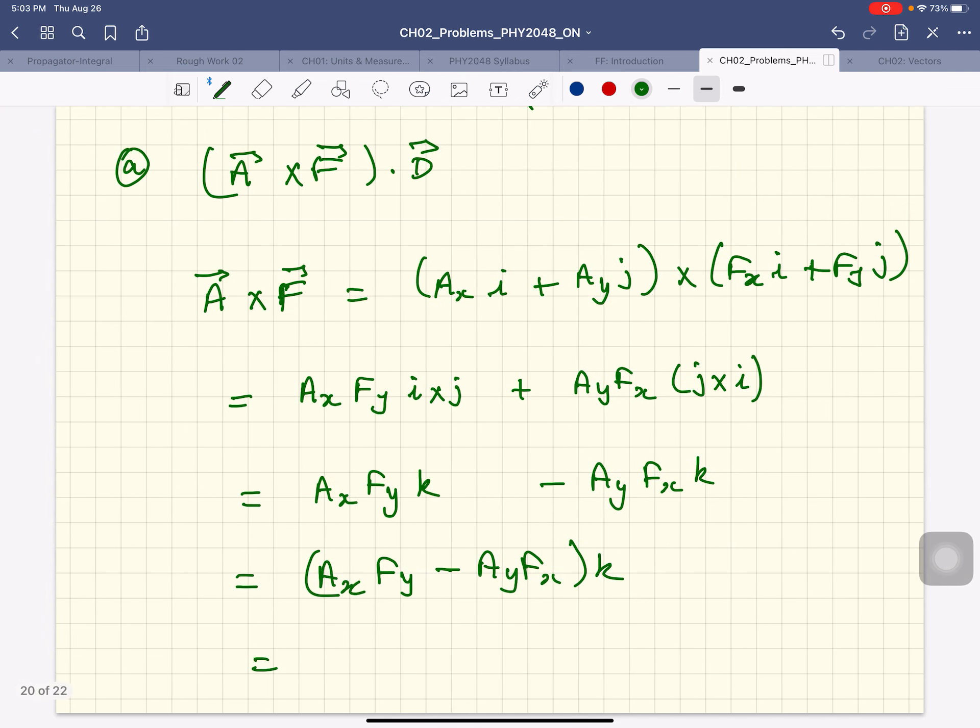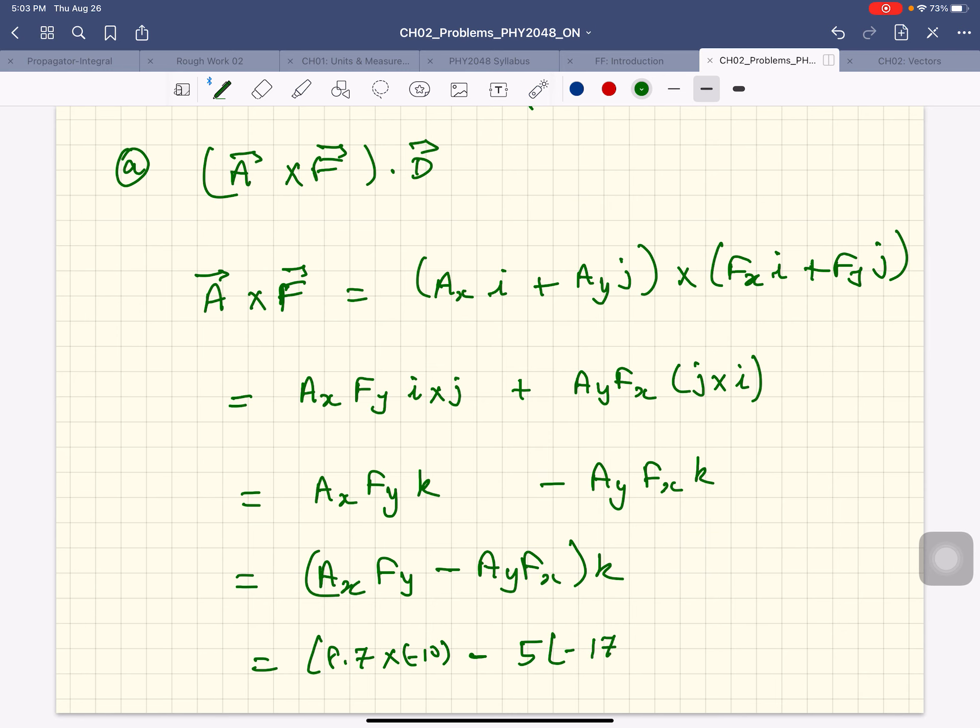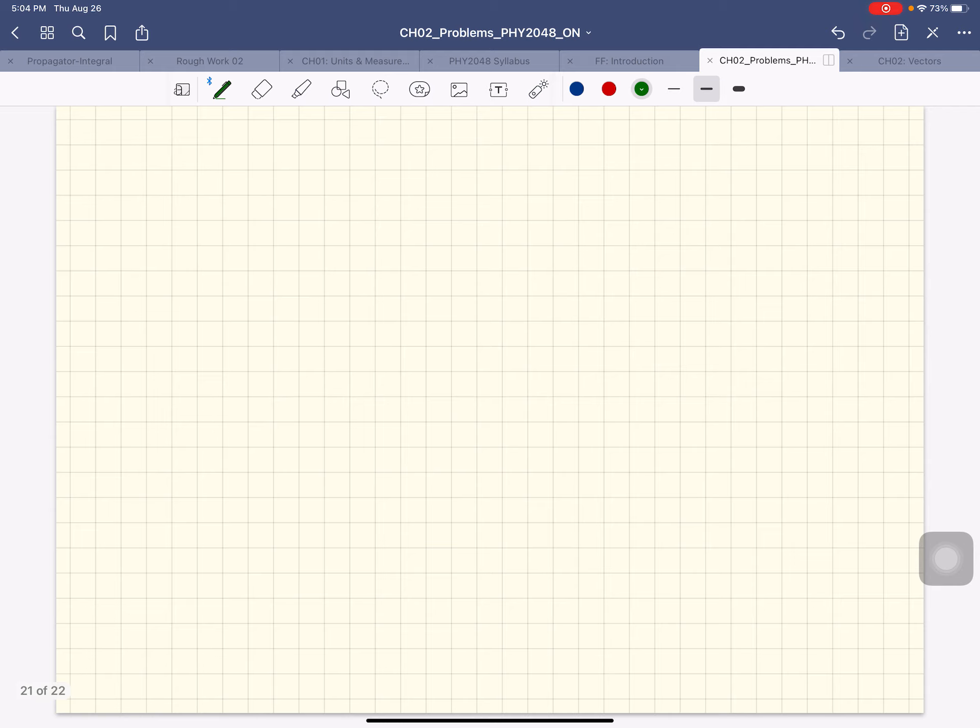So this is equal to AX FY: 8.7 times minus 10, minus AY FX: minus 5 times minus 17.4. And this is equal to minus 87 plus 87, which equals zero. So the cross product A cross F is zero K.